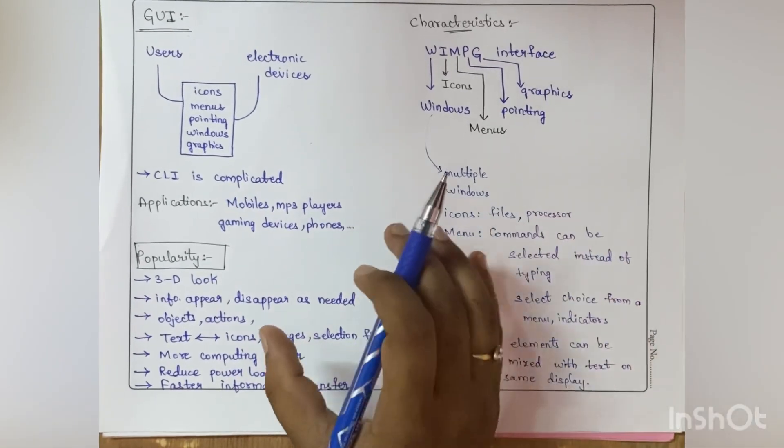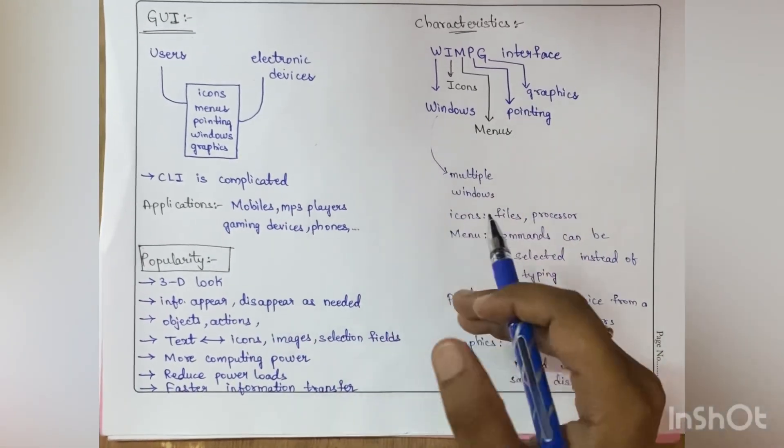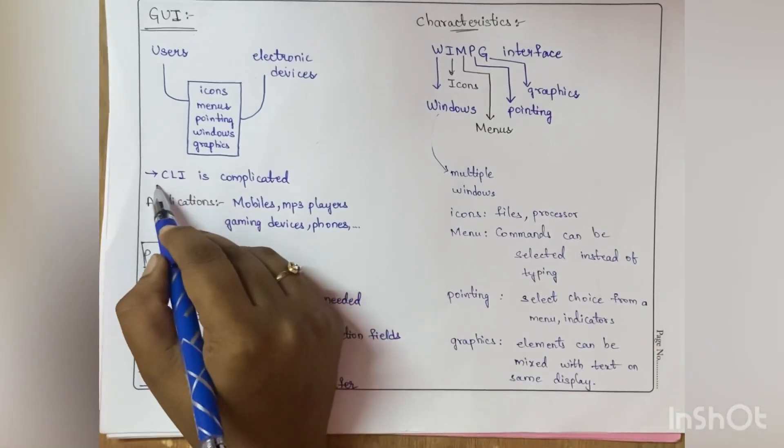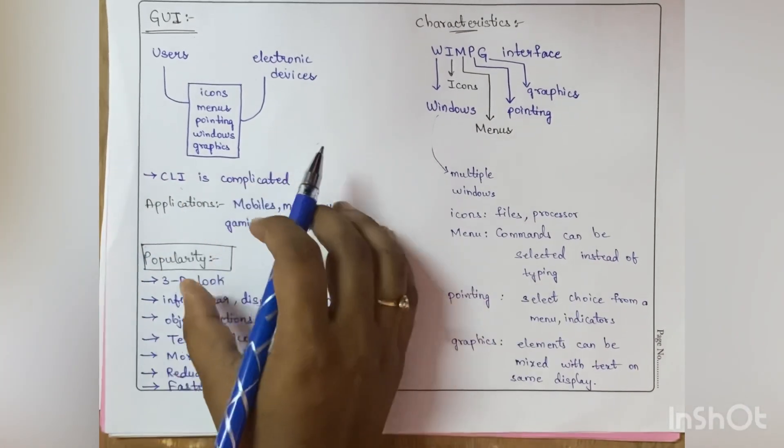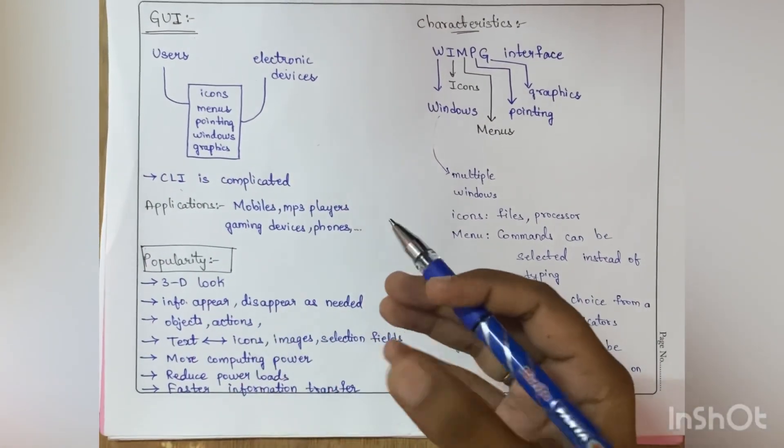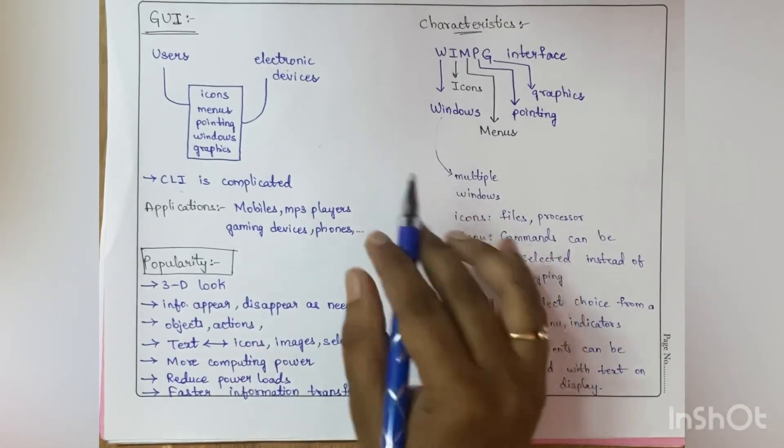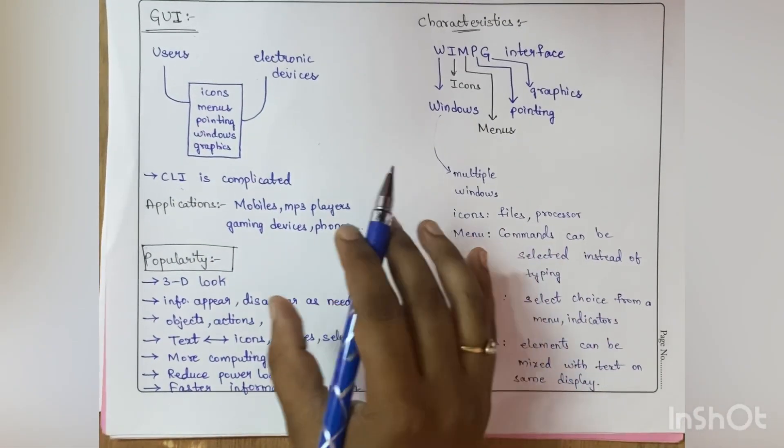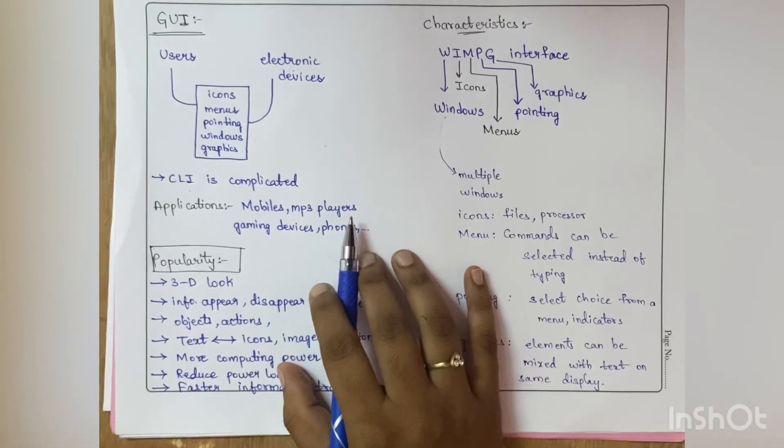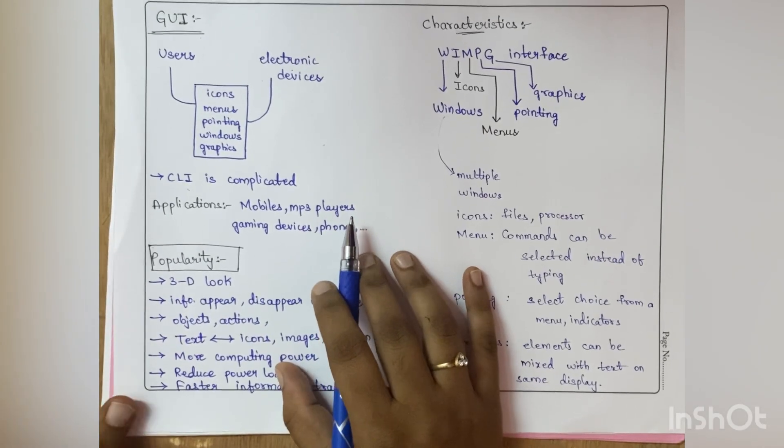Because commands are very complicated to remember. The command line interface is very complicated and it's hard for people to remember all the commands. Because of that reason, GUI came into the picture. This graphical user interface is used in applications like mobiles, mp3 players, gaming devices, and all these combined GUI things.